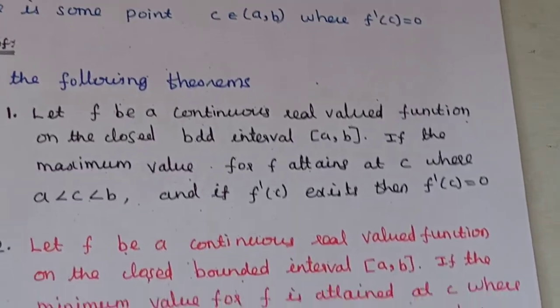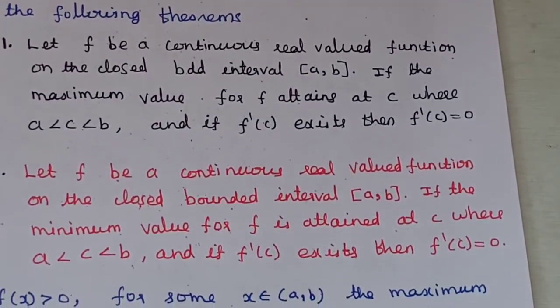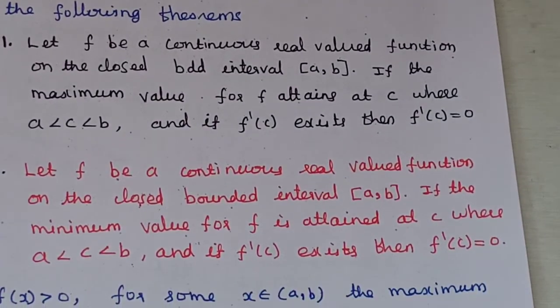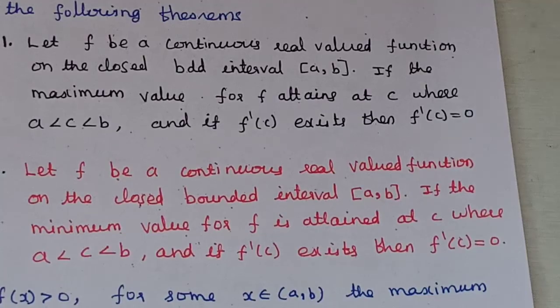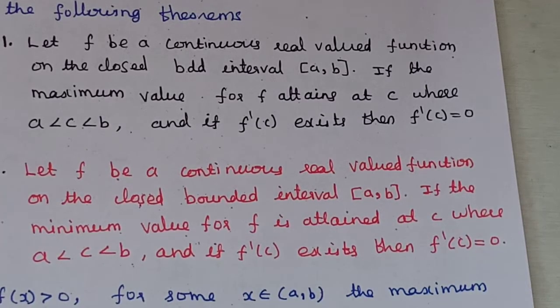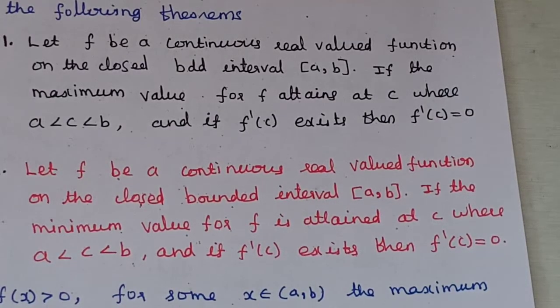Second theorem: let f be a continuous real-valued function on the closed bounded interval [a, b]. If the minimum value of f is attained at c, where c belongs to the open interval (a, b), and if f'(c) exists, then f'(c) is equal to 0.